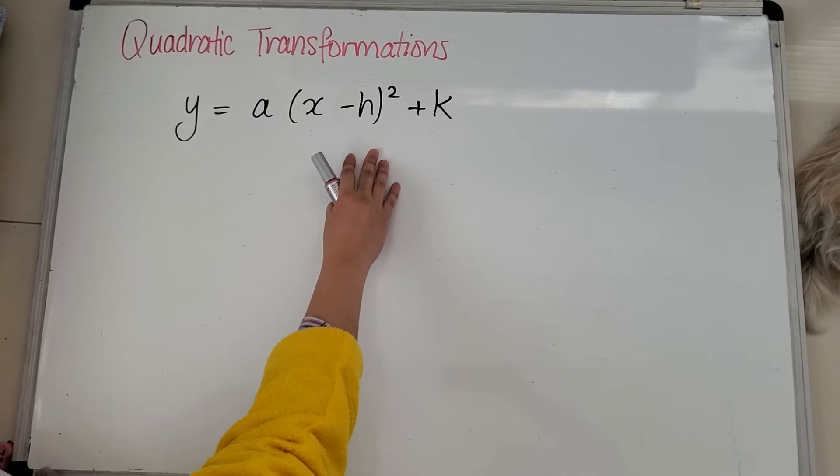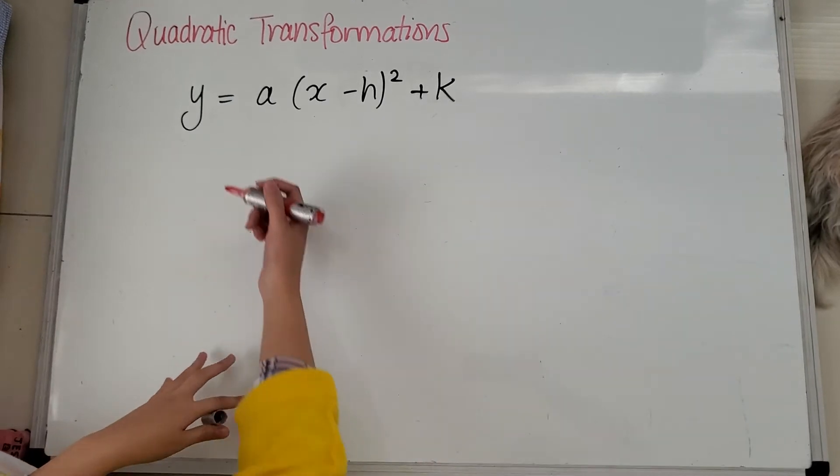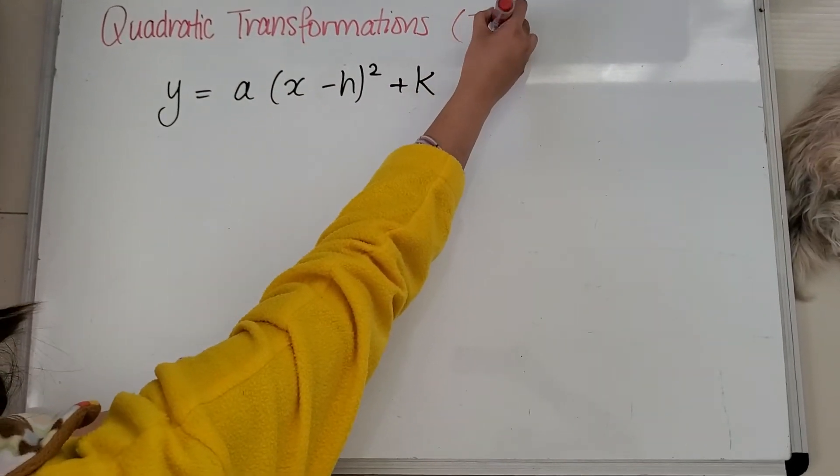So turning point form means that it's in brackets, and you can easily see the shifting of this. So when it's in this form, I'll just write TP for turning point.